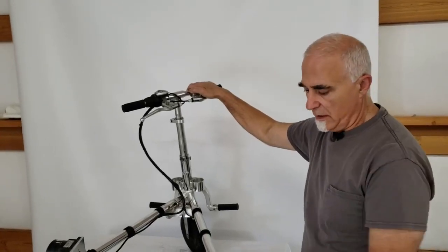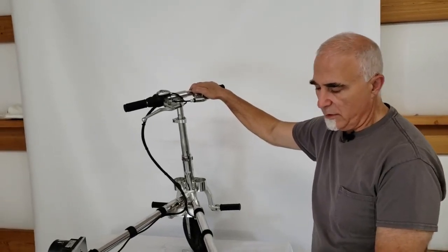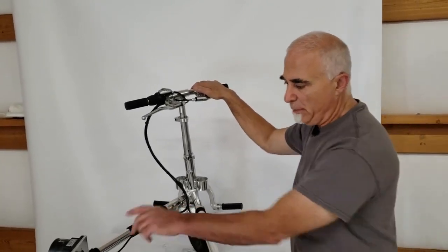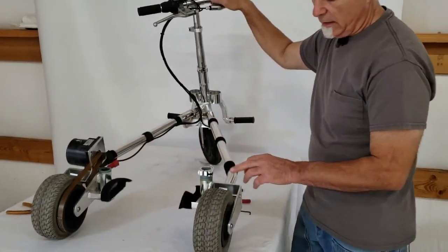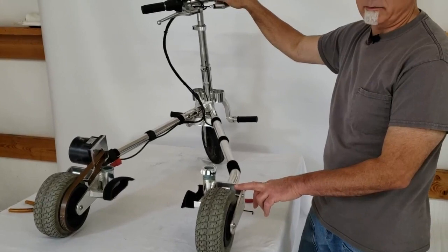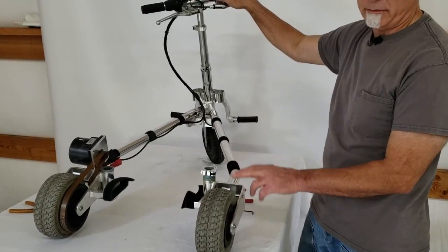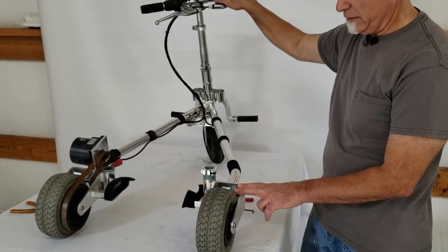Hi folks, Tony at TravelScoot again. We just shot the video on how to replace the brake shoe on the old belt drive model TravelScoots. Now we're going to show you the two brake adjustment procedures for the old belt drive TravelScoot. It's relatively simple.